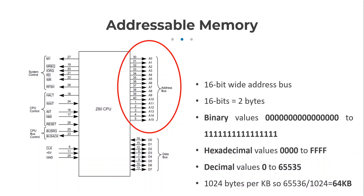Now before you all say — what about the Spectrum 128K? That had a Z80 CPU and it had more than 64 kilobytes of RAM. Well, they achieved that with some fancy tricks where several banks of 16 kilobytes actually shared the same address space, but that's way beyond what I'm going to look at in this video.